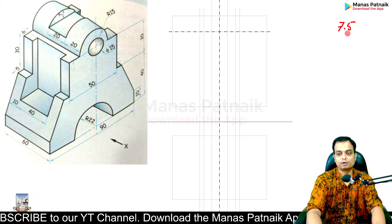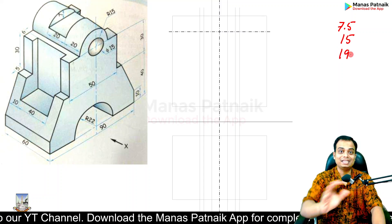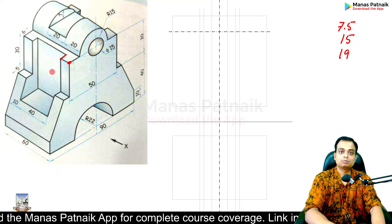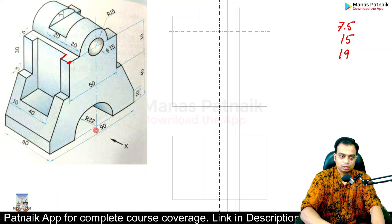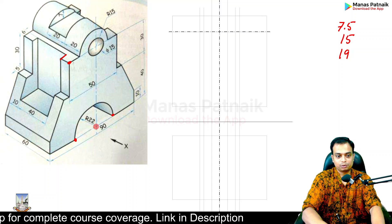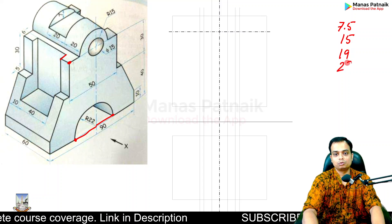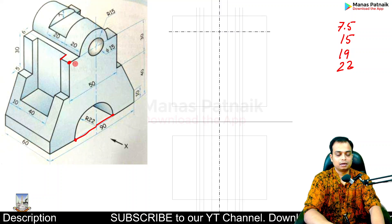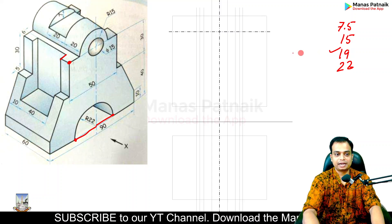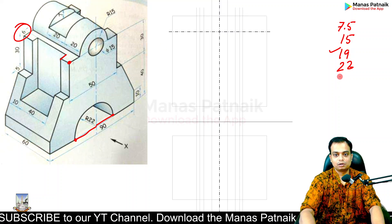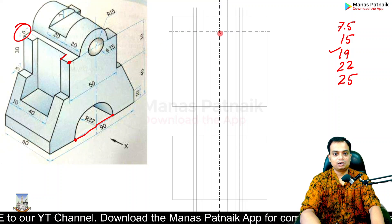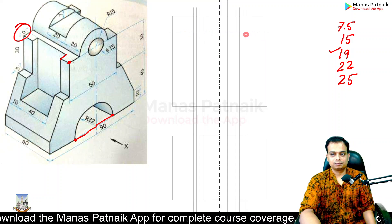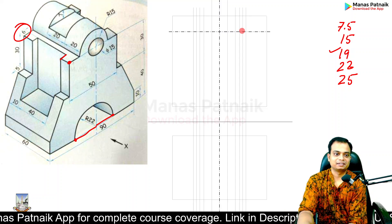So we have 7.5, then 15, then 19 on either side. Then add 6 more to get 25 — mark 25 to the left and 25 to the right. Also mark 22 to the left and 22 to the right for a particular profile point. So the sequence of distances from the center line is: 7.5, 15, 19, 22, and 25.